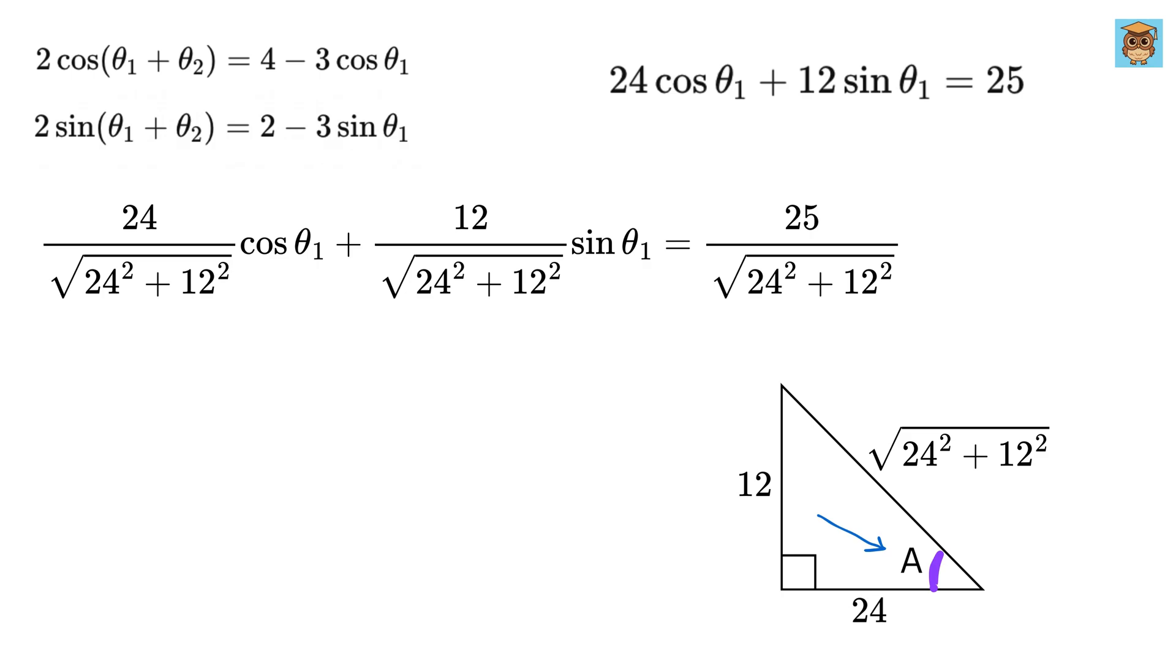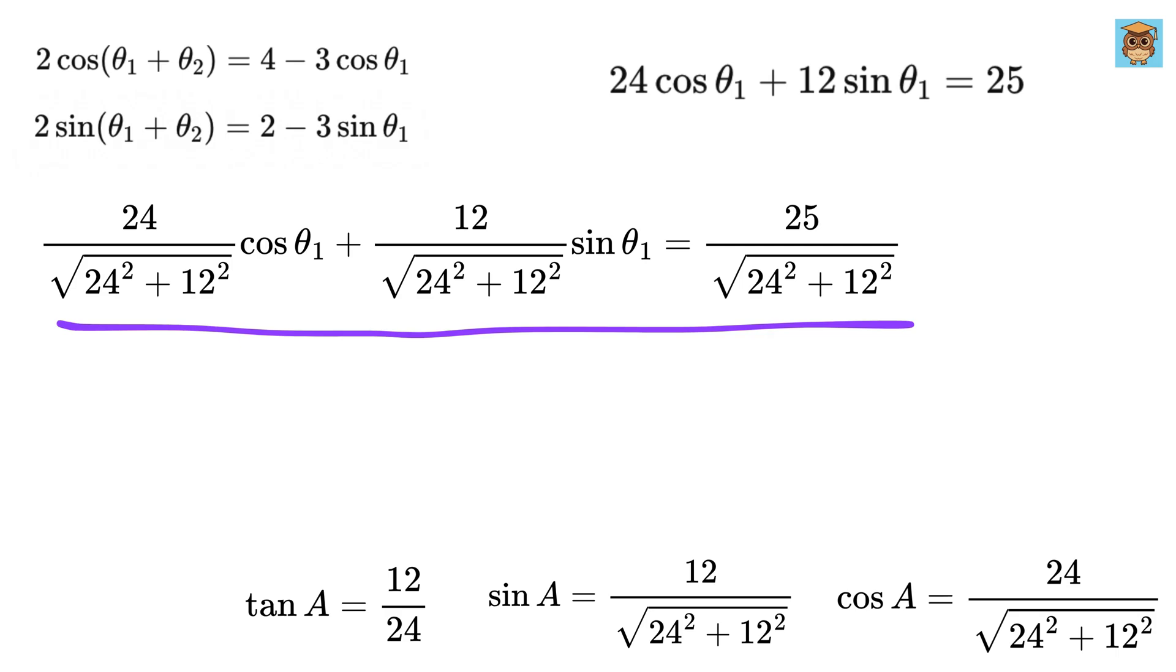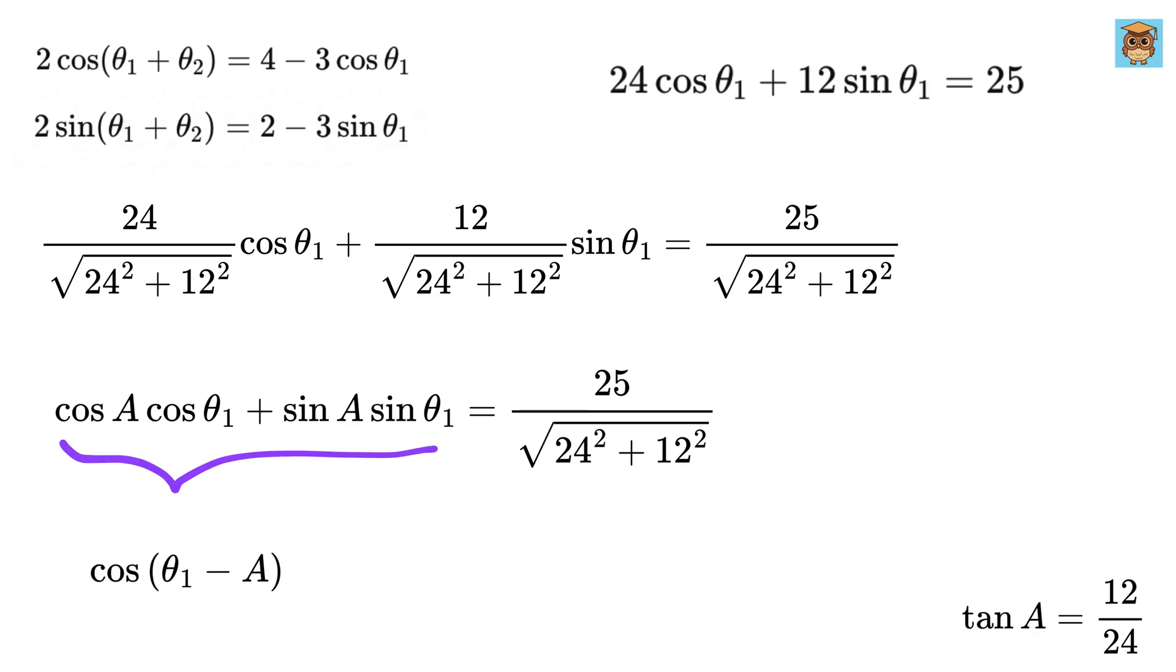So if this is some angle A, then cos of A will be adjacent over hypotenuse, or 24 over this, sin of A will be opposite over hypotenuse, or 12 over this, and tan of A equals 12 over 24. So we can rewrite this as cos of A times cos theta 1 plus sin of A times sin theta 1 equals 25 over this.